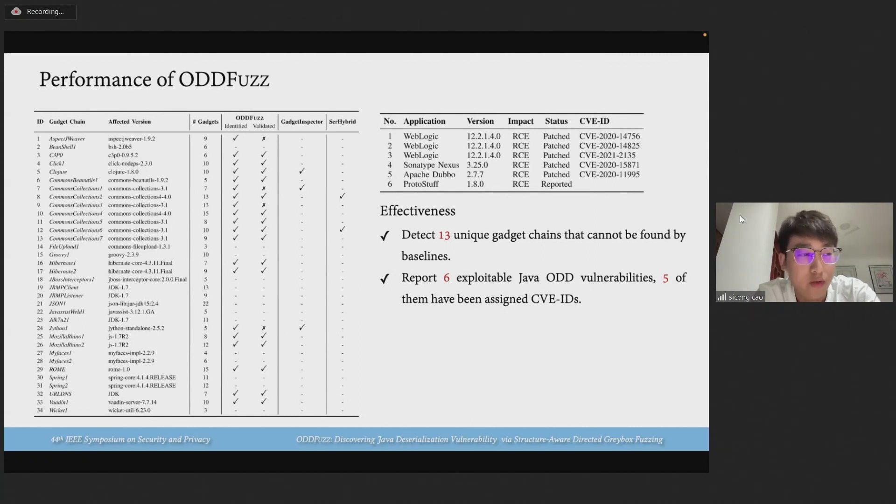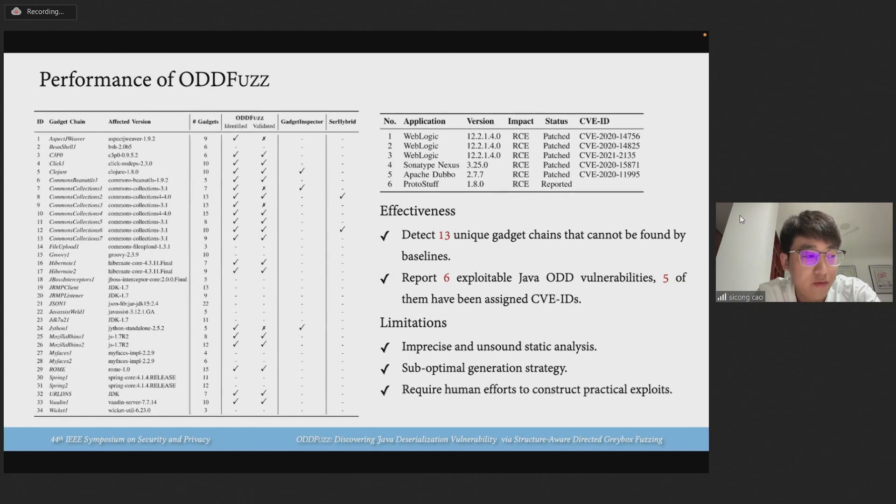Our approach also has several limitations. First, our static analysis is imprecise and relies heavily on expert knowledge. Second, although the awareness of our structure-aware generation strategy still needs to be suitable for diverse deserialization scenarios. And third, AuditFast also requires some human effort to help construct practical exploits.